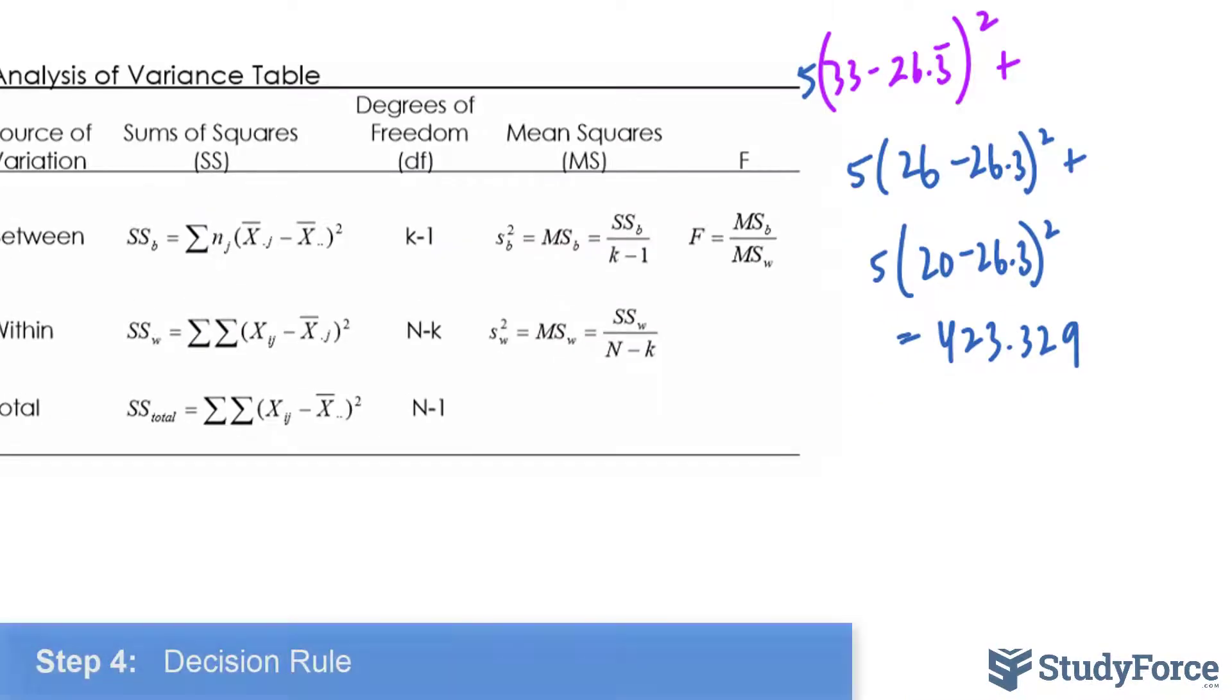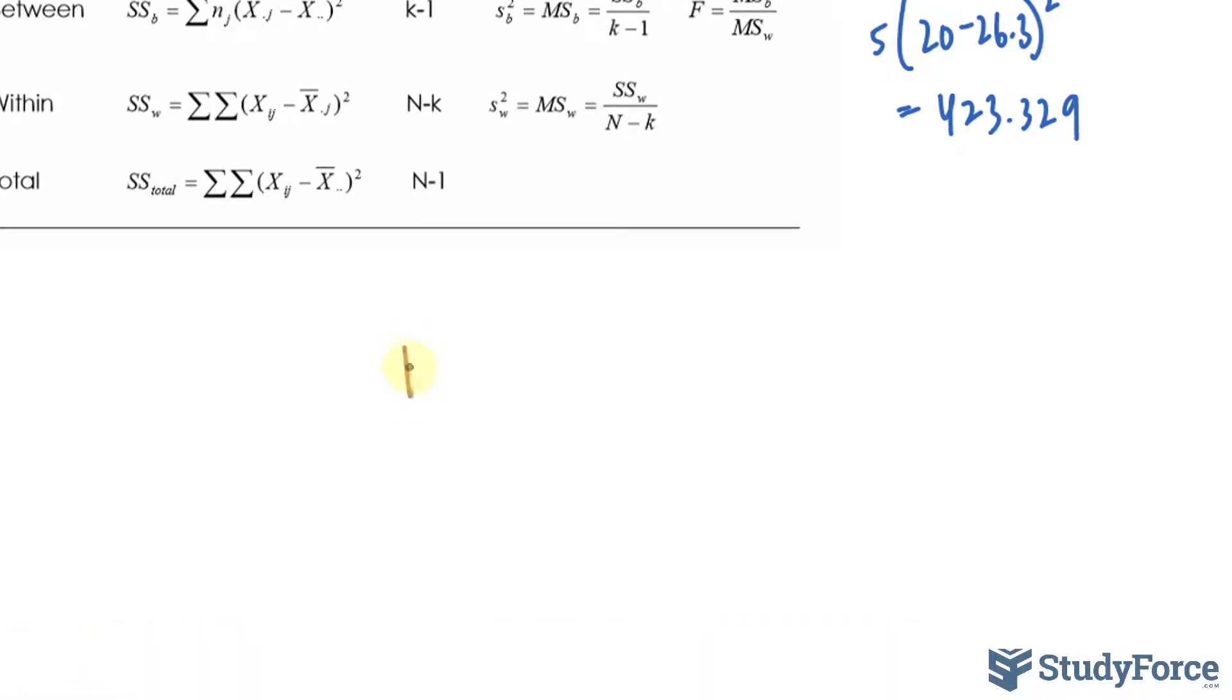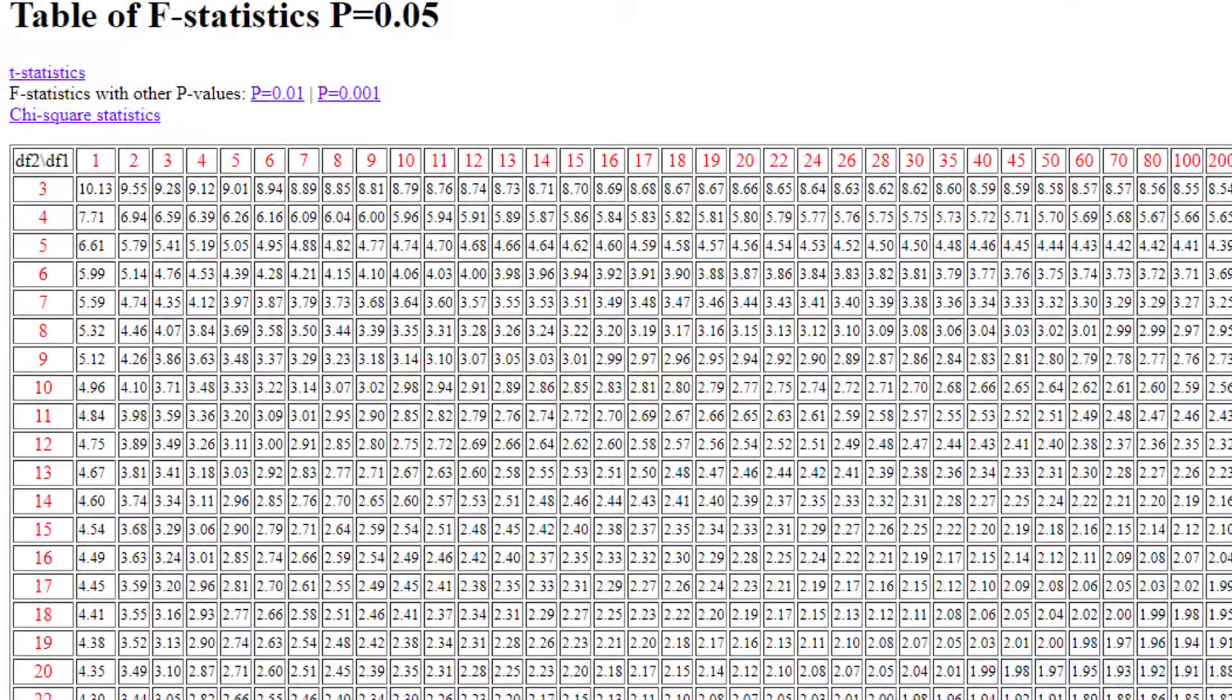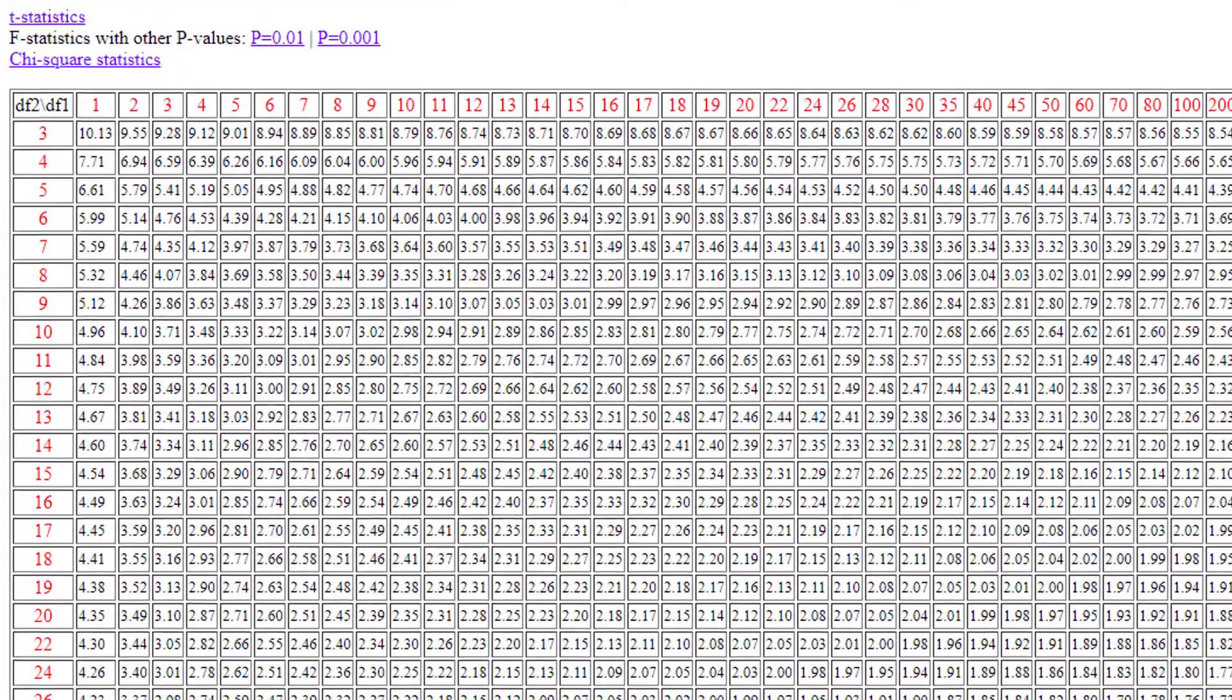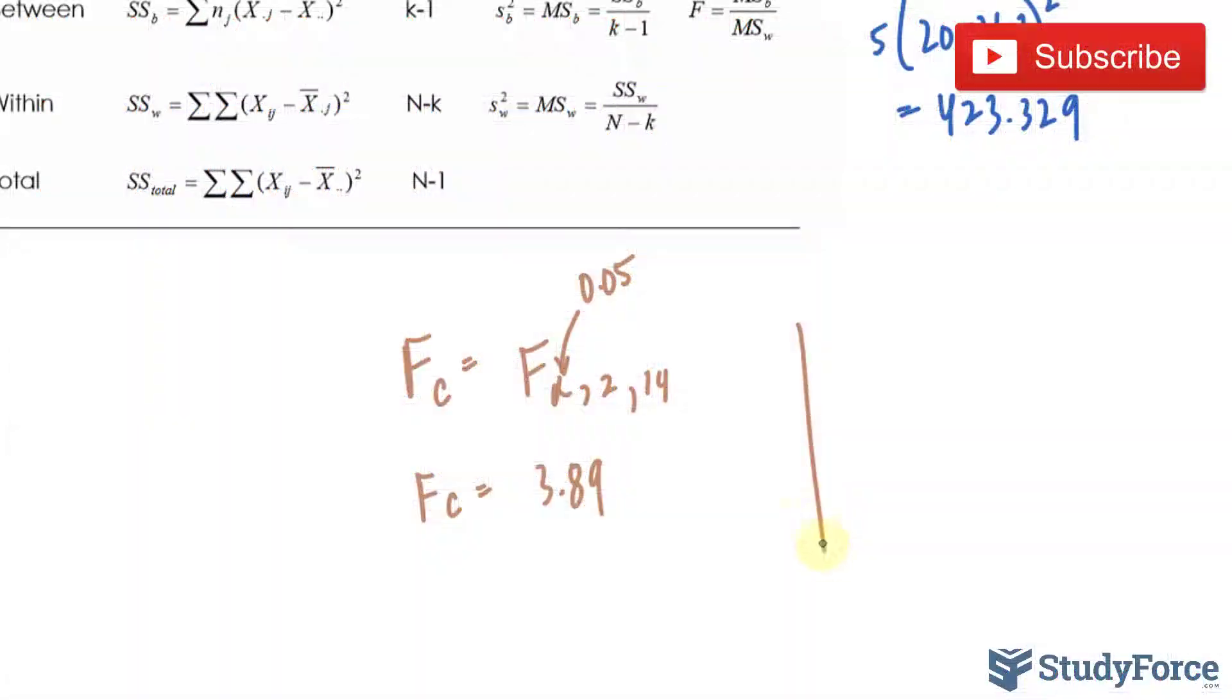We can go ahead and move on to step number four, which is where we start to make our decision. We will need the F distribution table to figure out the F critical. And to find the F critical, we use an alpha value of 0.05, the degrees of freedom we found for between, which was 2, and the degrees of freedom we found for within, which was 14. We look into our table, and you should end up with an F critical that is approximately 3.89.